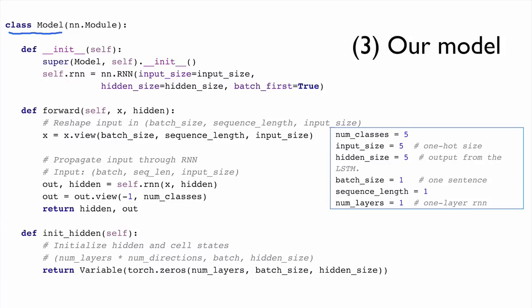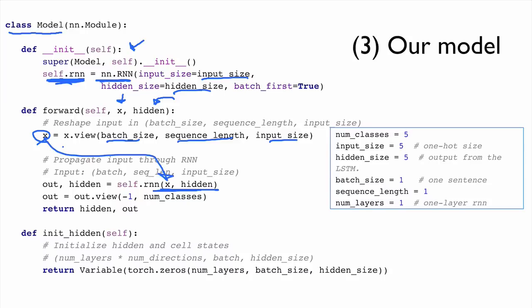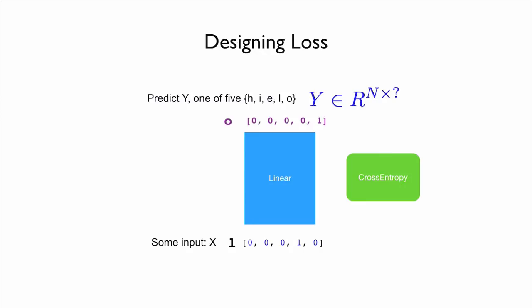Our model is a PyTorch class. In the initialization, the only thing we do is create an RNN cell for a given input size and hidden size. In the forward function, it gets x as input and a hidden as a second input. Before feeding, we make sure x is in the shape [batch_size, sequence_length, input_size]. Then we pass x to the RNN cell. We need to think about the shape of the output to compute the loss efficiently.